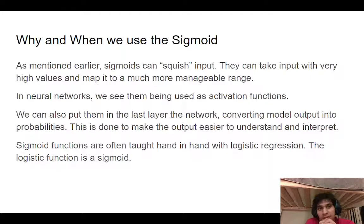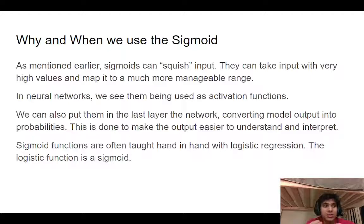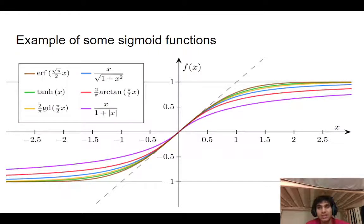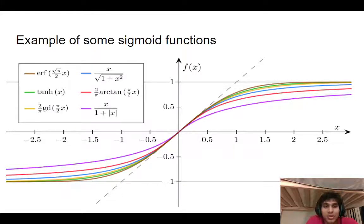Logistic regression is kind of the entry point for a lot of people to sigmoid functions. If you actually Google some videos online and they claim they're teaching you about sigmoid functions, they actually teach you about the logistic function, because very often these are used synonymously. Even the example I give here is of the logistic function. So these are some of the common sigmoid functions and you see them being constricted in different ranges. Functions of tan will show up very frequently.